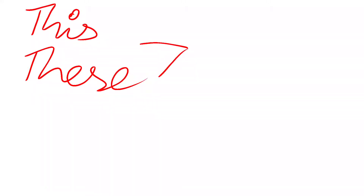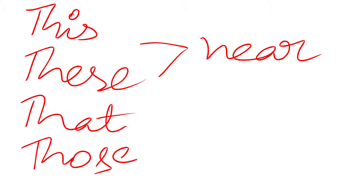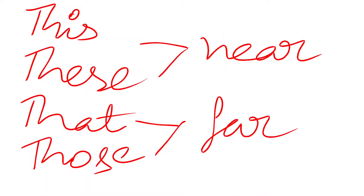We use 'this' and 'these' for people or things that are near to us. We use 'that' and 'those' for people or things that are farther away from us.